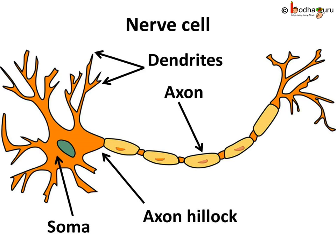Now, the nerves carry signals in the form of electrical signals. The long thread-like extension, which is also called the axon, carries the impulse. The specialized domain of the soma from where the axon originates is called the axon hillock.